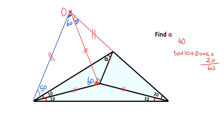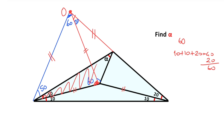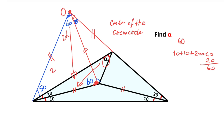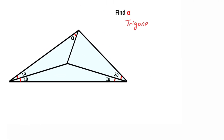Alternatively, let's call this point O. We have three equal lengths, which means point O is the circumcenter of this triangle. Since point O is the circumcenter, the central angle must equal two times alpha. So two alpha equals 60 degrees, which means alpha equals 30 degrees.